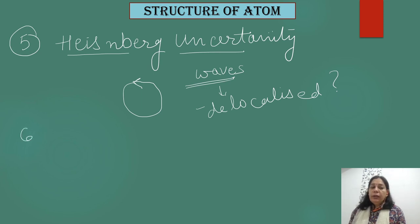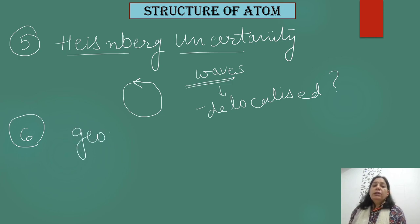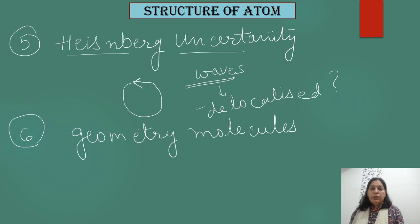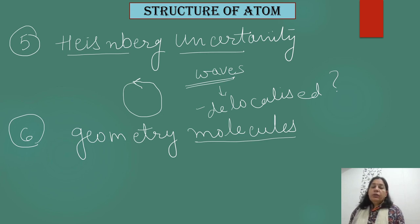One more drawback of Bohr's model is that it cannot explain the geometry of molecules. We know that atoms react with each other to form molecules, and molecules have a fixed shape. The arrangement of atoms within a molecule — molecular geometry — could not be explained using Bohr's model.